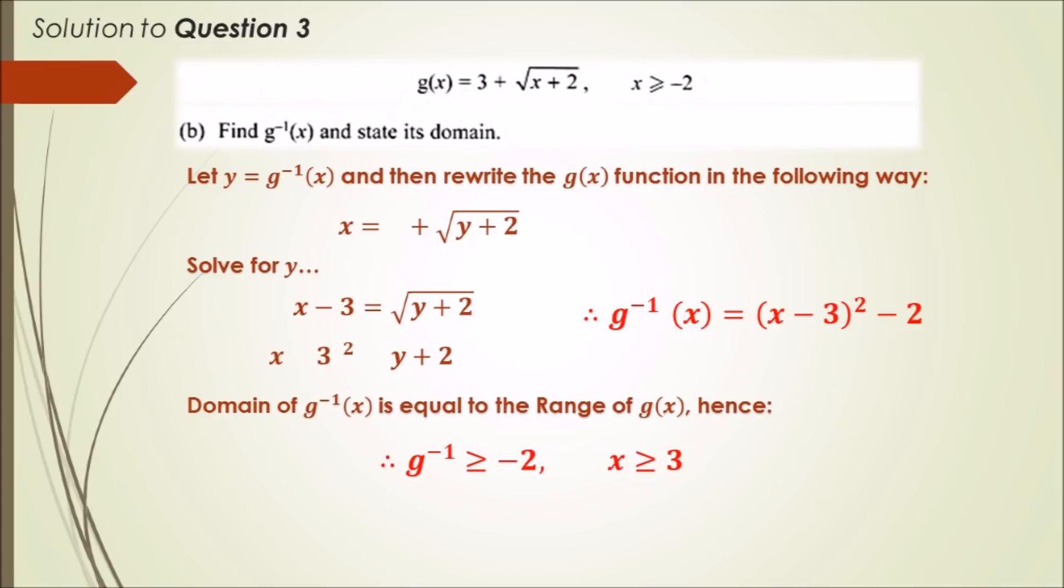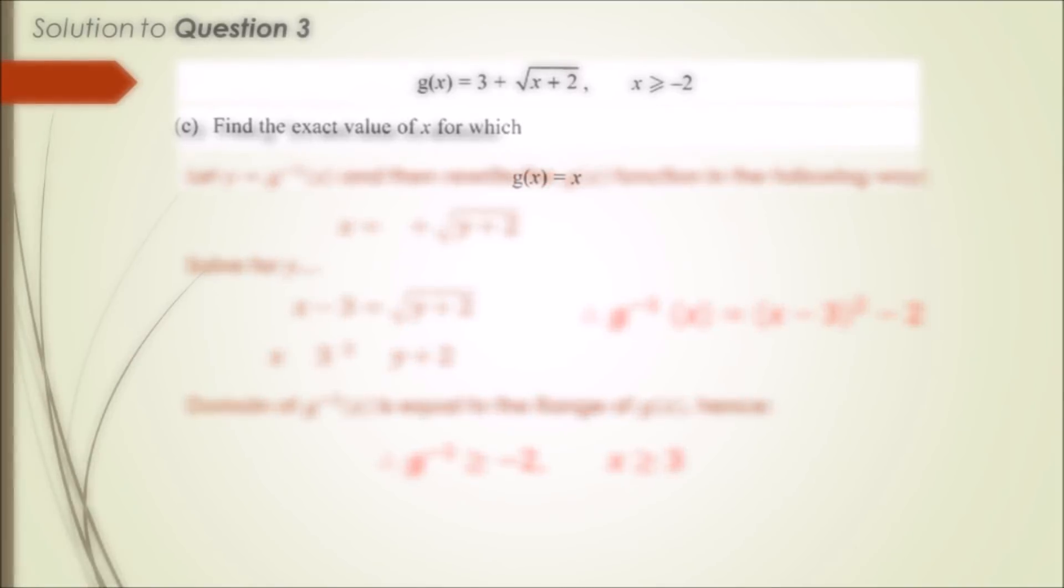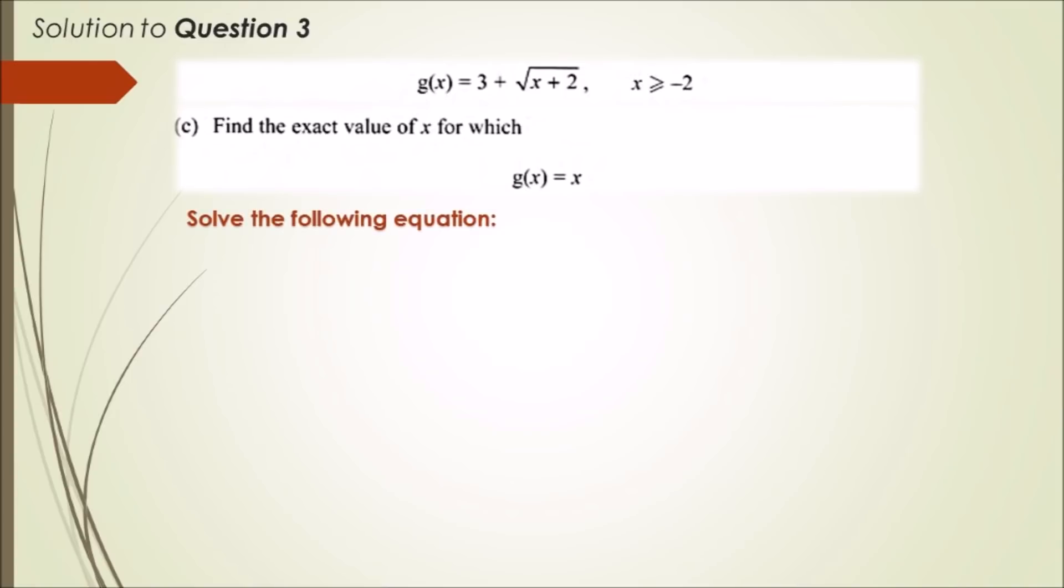Part (c): find the exact value of x which satisfies the function g(x) equals x. This is just a bit of algebra, so let's tackle it. Let's try and solve the following equation: x equals 3 plus root x plus 2. What I did is subtract 3 across and then square both sides, which gives us (x minus 3) squared equals x plus 2.